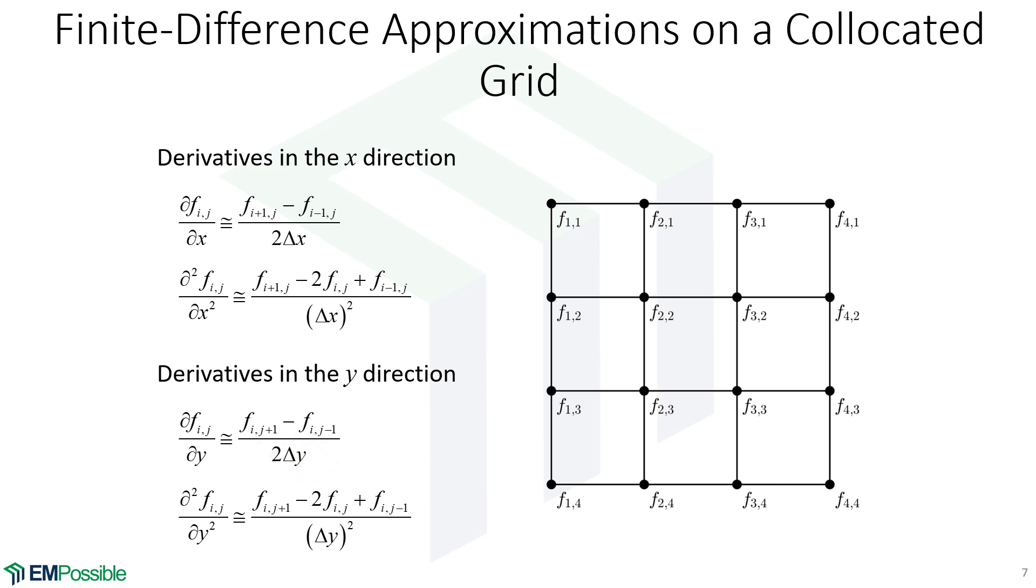The second-order derivative at f3,3 would be f3,4 minus 2 times f3,3 plus f3,2 divided by delta x squared. Really, the only difference between these x and y derivatives is one's going horizontally in the grid, the other's going vertically in the grid.